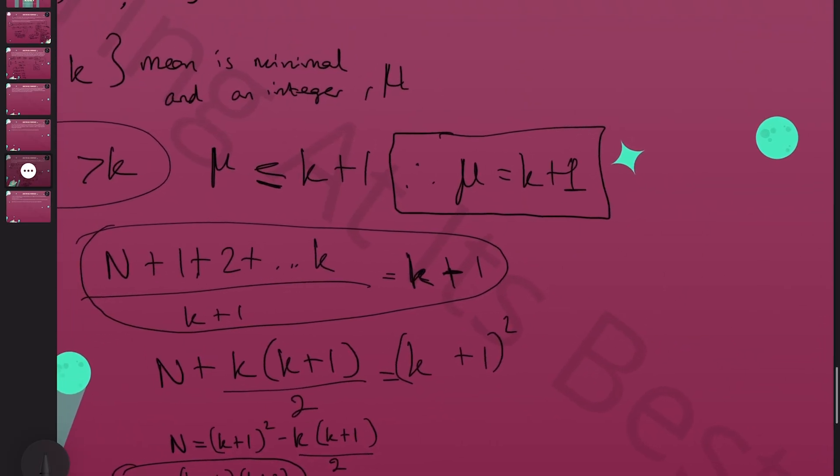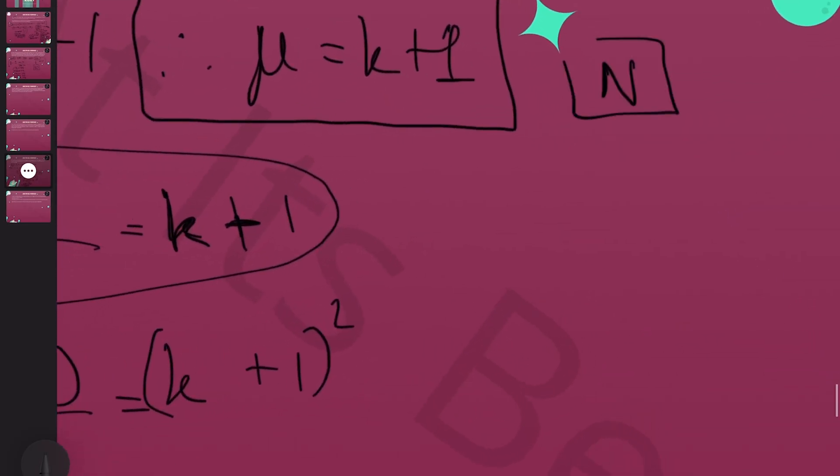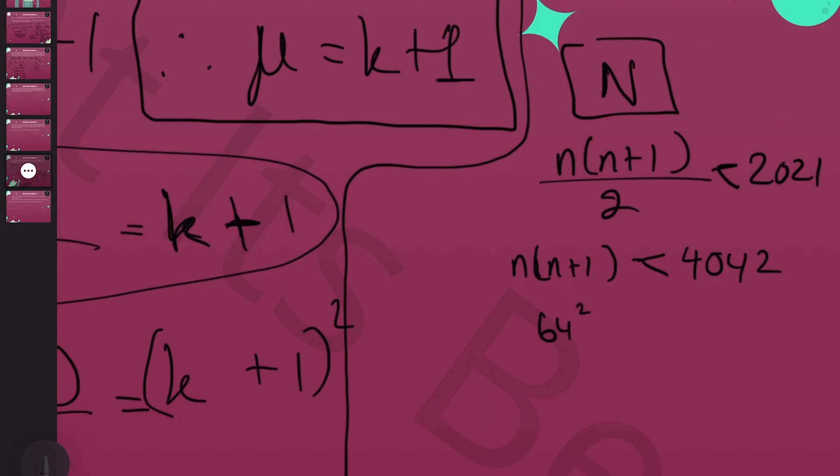The last thing we need to do is look for n. We know these are triangular numbers, and we need these to be less than 2021. That means n times n plus one has to be less than 4042. It's just a case of finding what values will work.